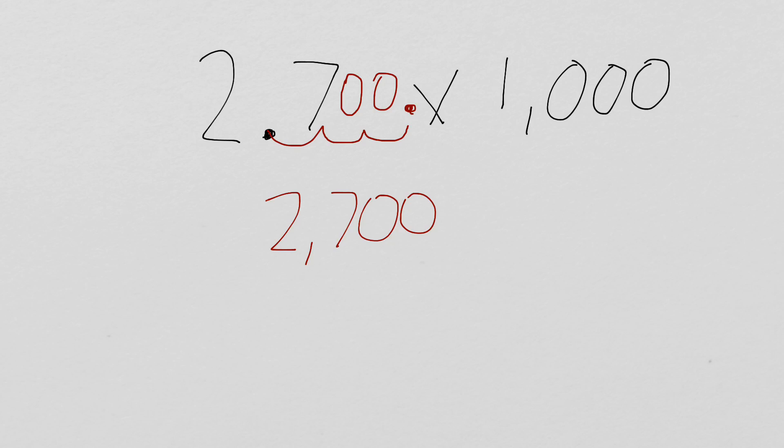and our answer is 2,700. Or, if you want to put the decimal at the end, 2,700 and 0 tenths. But, what happens if we're not multiplying by a multiple of 10 like 1,000, but we're multiplying by 1 tenth?